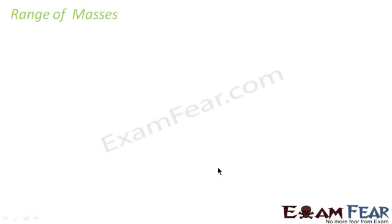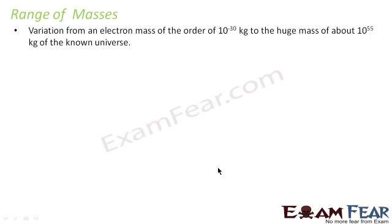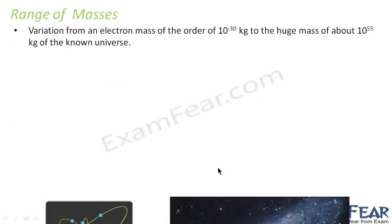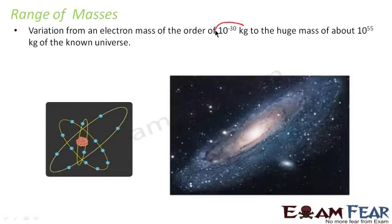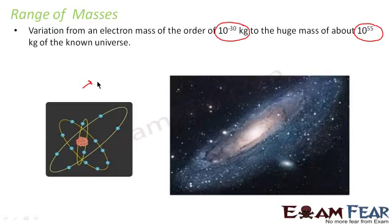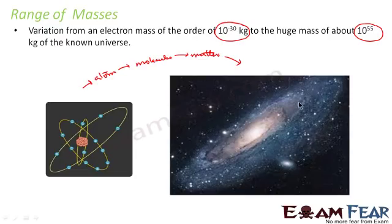Now let us look at the range of masses. Mass varies from the electron, which has a mass of the order of 10⁻³⁰ kg, all the way to the universe at approximately 10⁵⁵ kg. Electrons make up atoms, atoms make up molecules, molecules make up matter and all things around us, which in turn make up the entire universe — so the variation in mass is enormous.